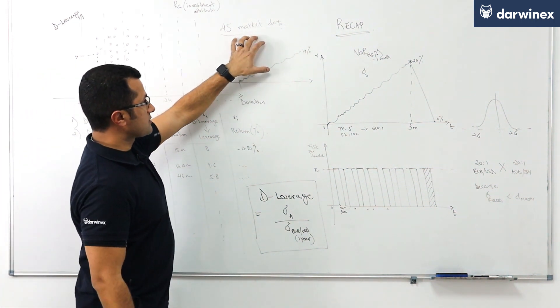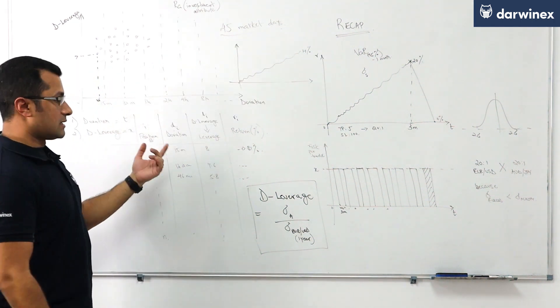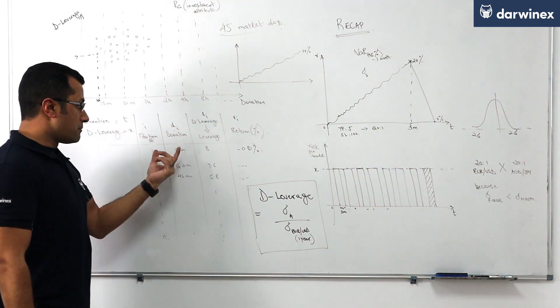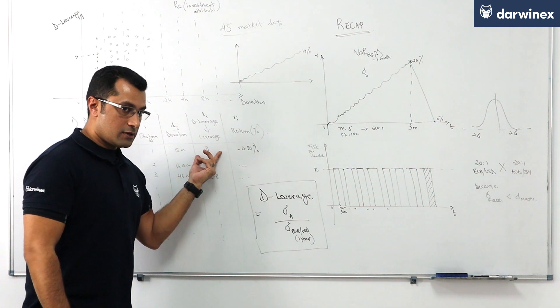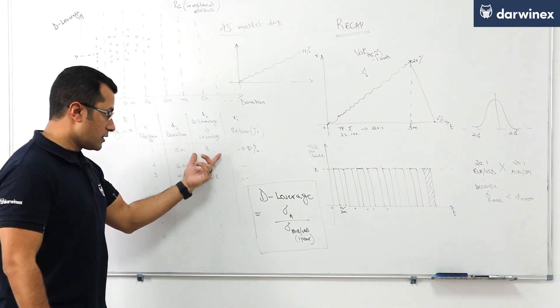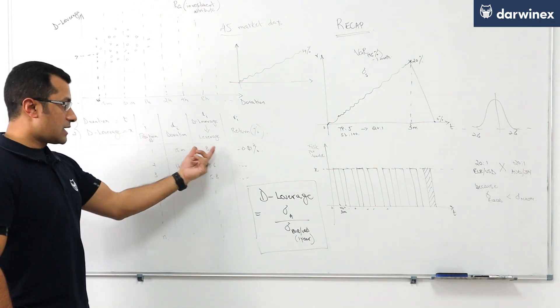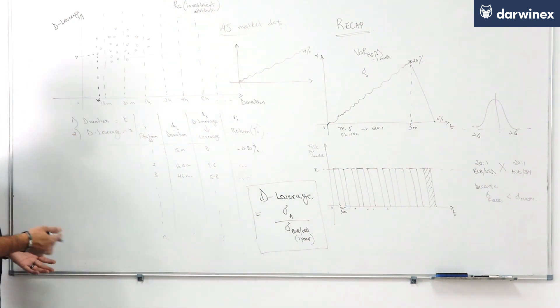using the risk behavior as exhibited by the trader over this last 45 market day period that risk behavior being quantified by duration and leverage, effective leverage on the euro dollar were we to take a trade on the euro dollar using that duration and leverage mix over the last one year.